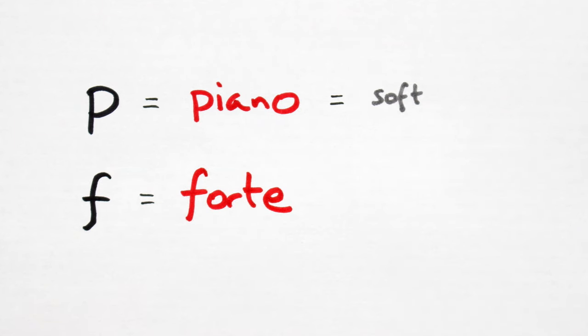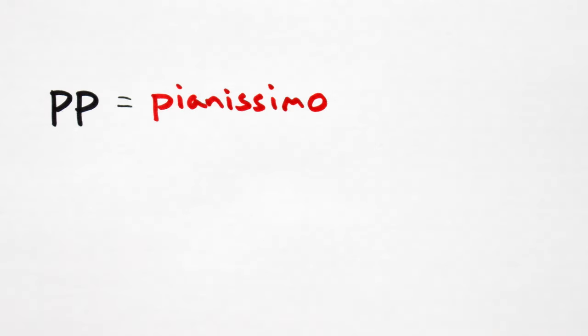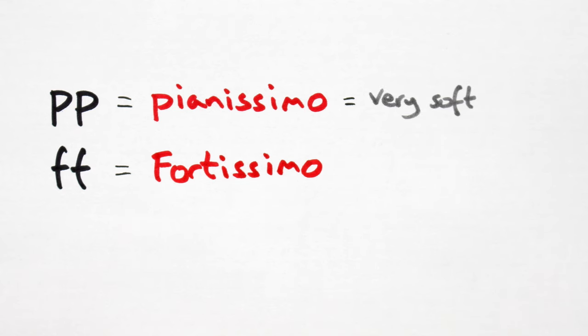Piano means play softly or quietly, whereas forte means to play loudly. If we double up the letters, we get pianissimo and fortissimo. Double the letters and you double the effect. Pianissimo means to play very soft and fortissimo means to play very loud.